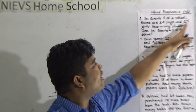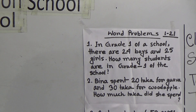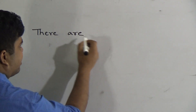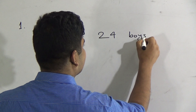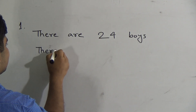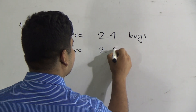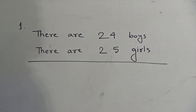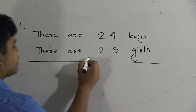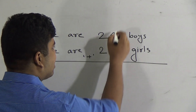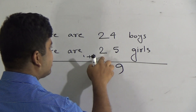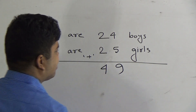Here there are 24 boys and 25 girls. If we add them, we get the result. So we write 24 boys and 25 girls, and we need to find the total students by addition. We add the ones place first: four plus five equals nine. Then the tens place: two plus two equals four. So the answer is 49.